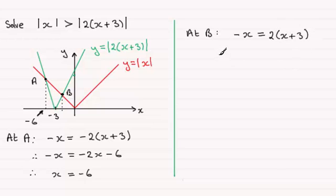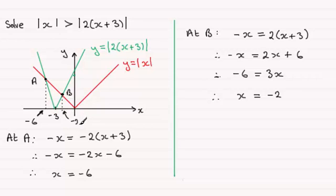If we expand the bracket again we've got minus x equals 2x plus 6. If I rearrange this, add x to both sides and subtract 6 from both sides, you get minus 6 equals 3x. So if I divide both sides by 3, you end up with x equaling minus 6 divided by 3 which is minus 2. So the x coordinate at b is minus 2.